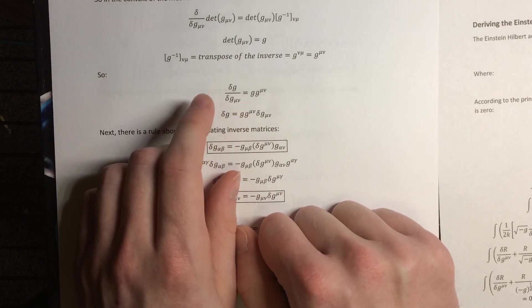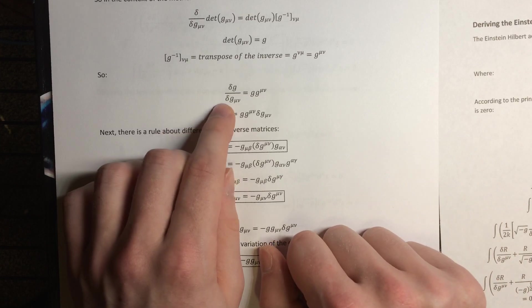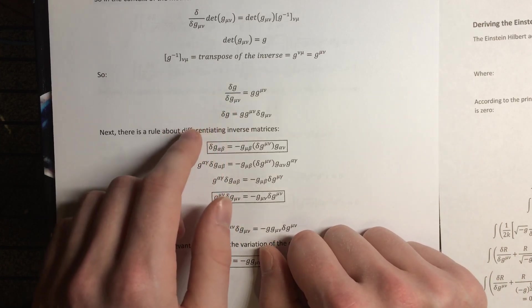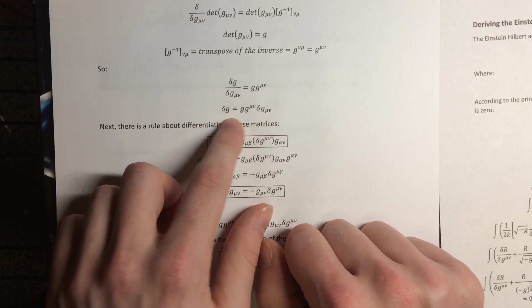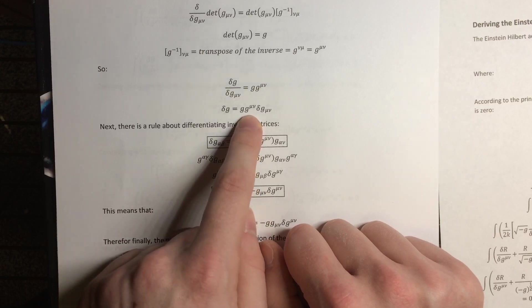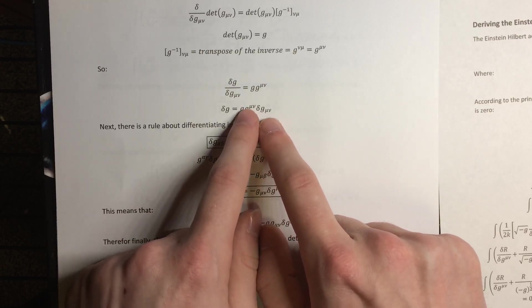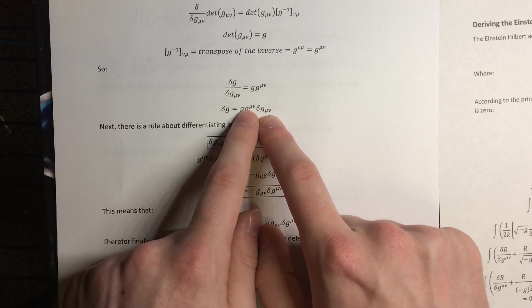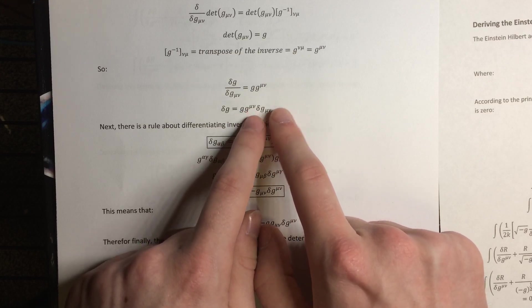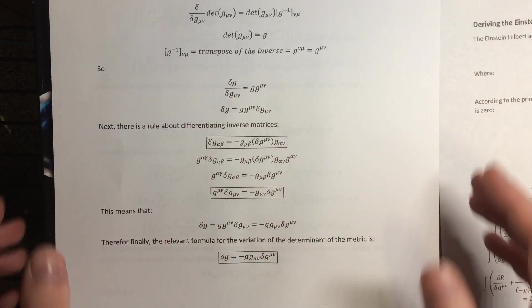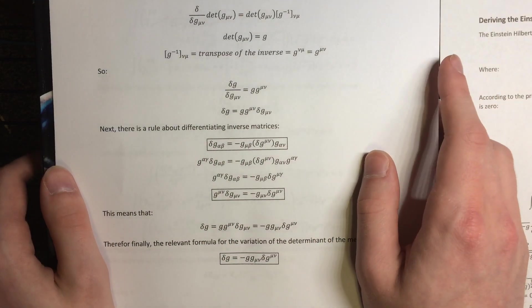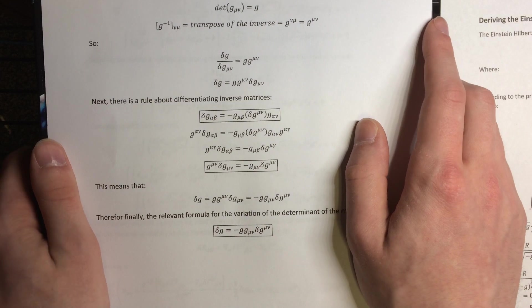The first thing we need to do to get us a step closer to the result we're looking for is multiply it by the variation of the covariant metric, which gives us this. So now, the thing we need to do is figure out what happens, figure out how we can get this in terms of the variation of the contravariant metric, so that we can get a cancellation that's useful. So we need another identity in order to figure that out.